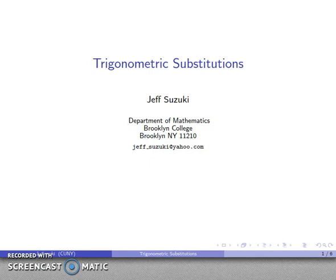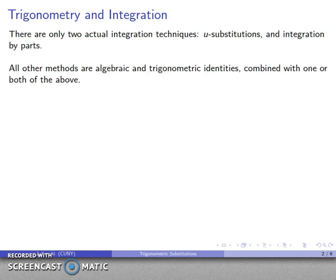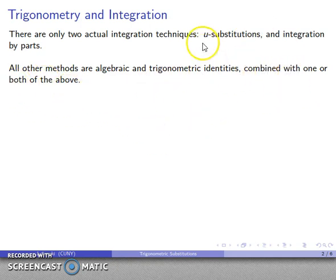One form of integration for particularly messy functions is usually under the heading of trigonometric substitutions. The thing to remember is there are actually only two real integration techniques: u-substitution and integration by parts. Any other method — any other way of evaluating an integral — is going to be based on some sort of algebraic or trigonometric identity. We'll do some algebra, some trigonometry, and then combine the result with one of these two techniques. Everything else is algebra and/or trigonometry.